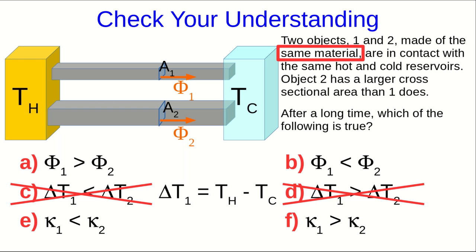Also, they're made of the same material, and thermal conductivity is a material property. So the fact that they're of the same material tells us the two thermal conductivities are the same, and so E and F can't be right.